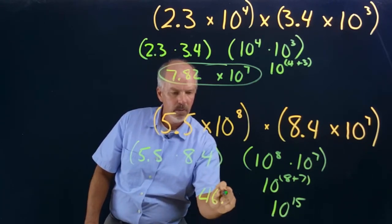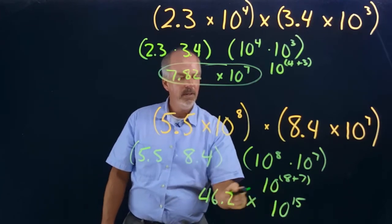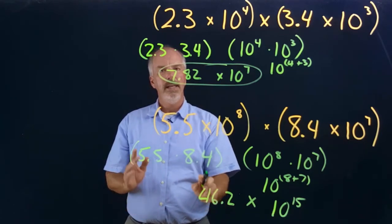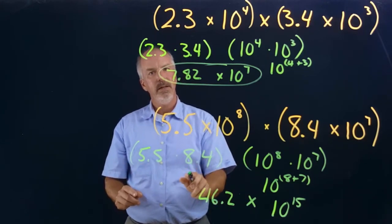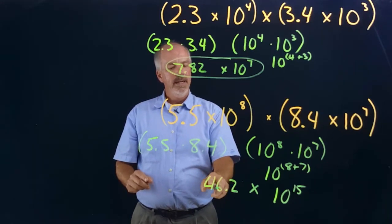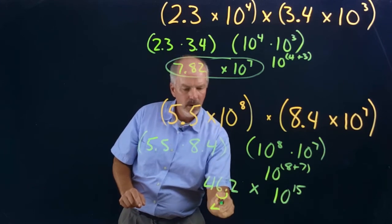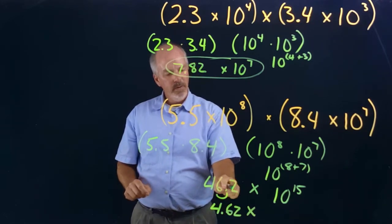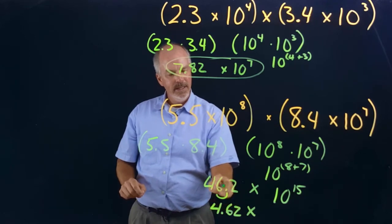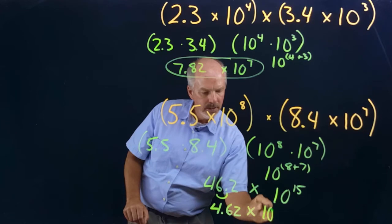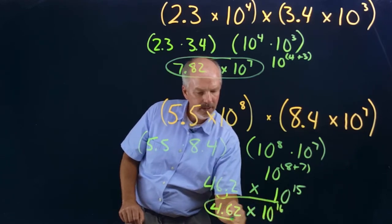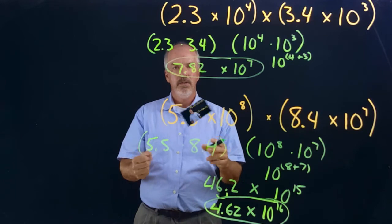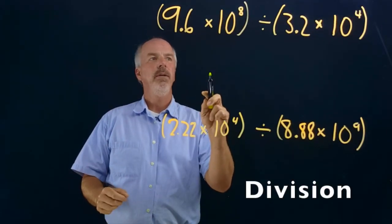So 5.5 times 8.4 equals 46.2, and that's times 10 to the 15th. But remember, the first factor must be at least 1 and less than 10. Since 46.2 is not less than 10, we move the decimal one place to the left, giving us 4.62. When we move the decimal to the left, this side decreases, so the power of 10 must increase — that becomes 10 to the 16th. Our answer is 4.62 times 10 to the 16th.